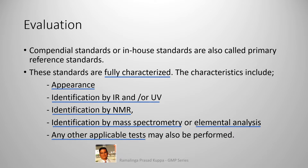UV-visible spectroscopy provides information on absorbance of ultraviolet or visible light by chemical compounds, which results in distinct spectra for specific compounds. IR provides detailed information on functional groups of the compounds. NMR provides very important data on spatial orientation and structure of the compound unambiguously. Mass spectrometry provides molecular mass details and elemental analysis provides data on the constituent elements in the compound. This establishes completely the structure elucidation of the compound.